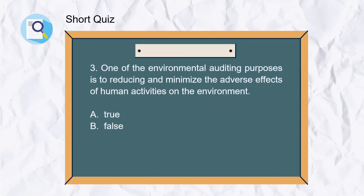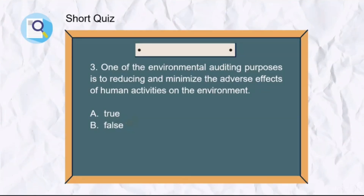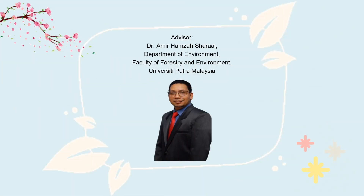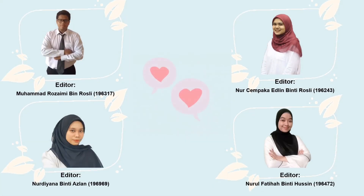Third question: one of the environmental auditing purposes is to reduce and minimize the adverse effects of human activities on the environment. A. True, B. False. The answer is A. True. That's all for part 1. I hope you gained more knowledge about environmental auditing in this video. Don't forget to look up the next video. Thank you for watching. Bye!